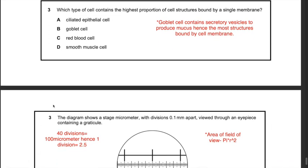Next question: which type of cell contains the highest proportion of structures bound by a single membrane? The best answer is B — goblet cell — because goblet cells contain secretory vesicles to produce mucus, so they will have the most structures bound by a single membrane.